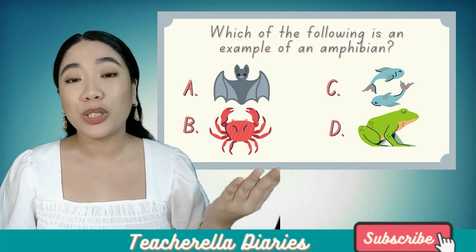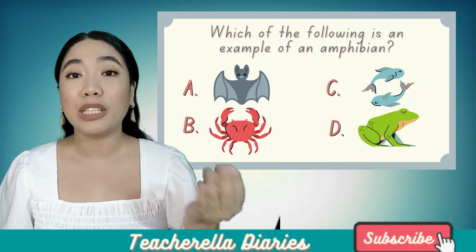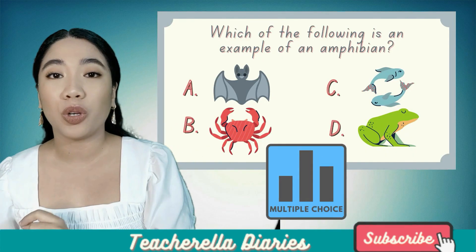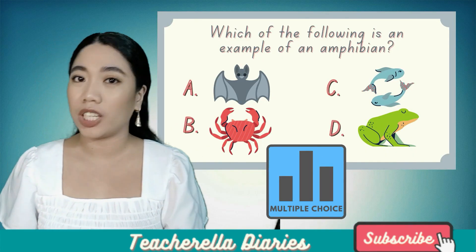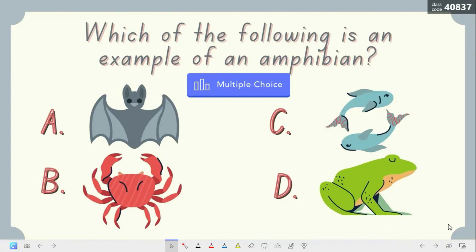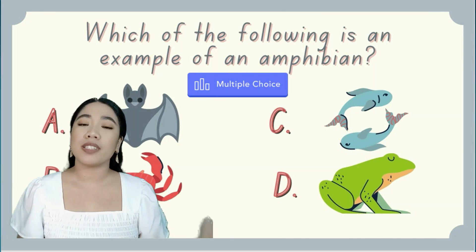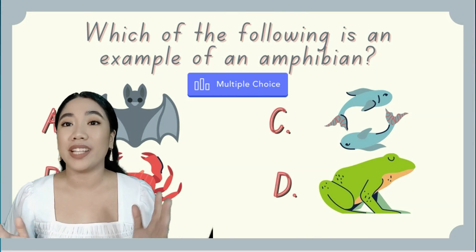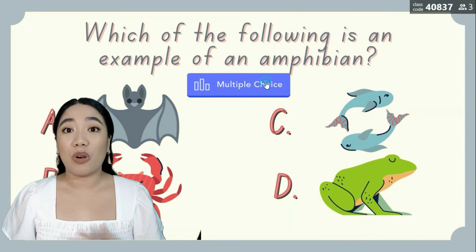Say we want to turn this slide into a multiple choice question activity: 'Which of the following is an example of an amphibian? A. Bat, B. Crab, C. Fish, or D. Frog?' Of course, the answer is letter D.